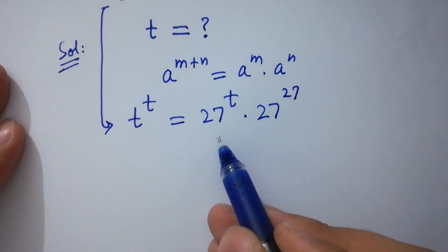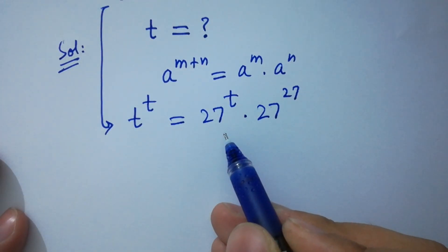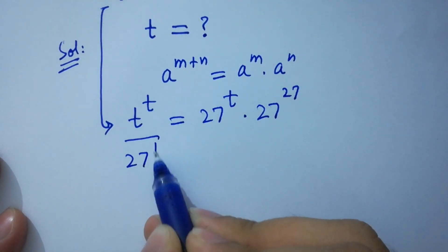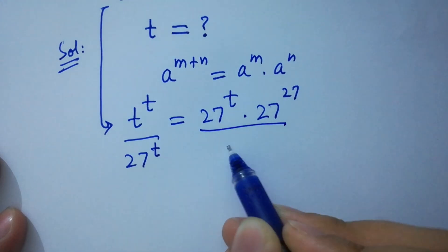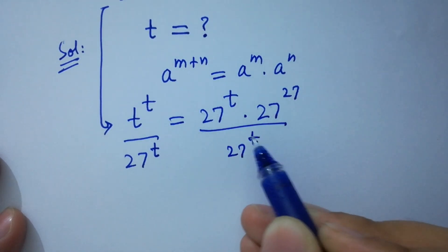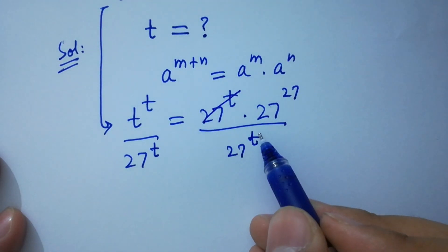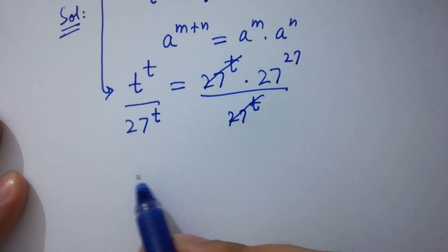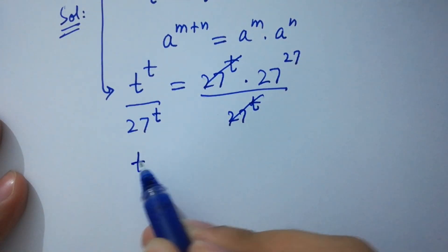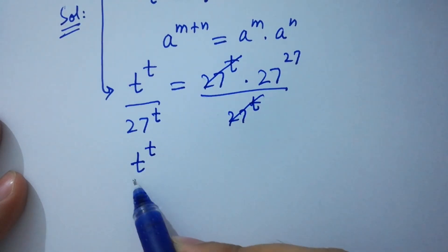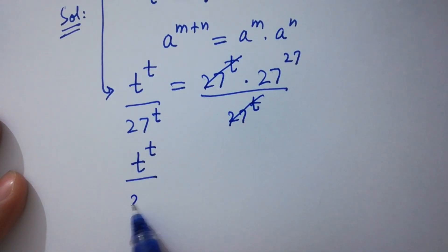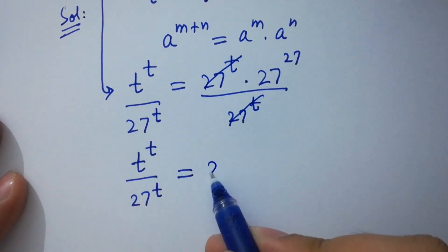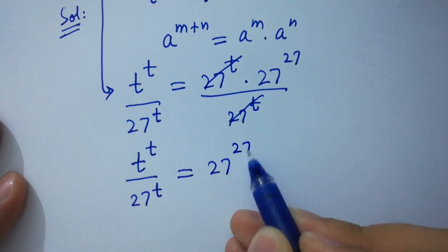To cancel this, divide by 27 to the power t on both sides. 27 to the power t and 27 to the power t cancel. We have t to the power t over 27 to the power t equals 27 to the power 27.